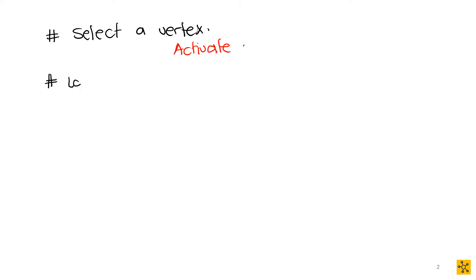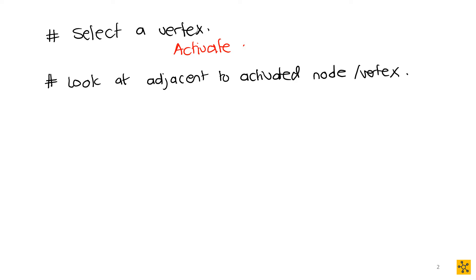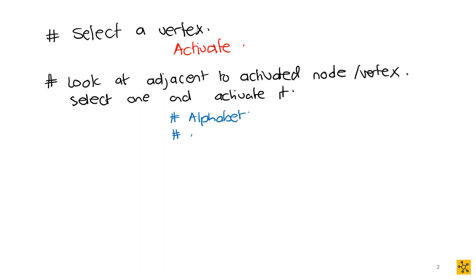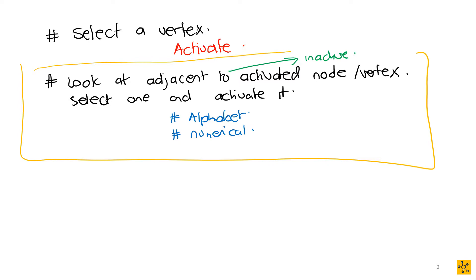Then you look at the vertices adjacent to this activated node and you select one and activate it. When you select one and activate it, usually you go by alphabet or by numerical order. Then you look at all the adjacent vertices connected to that activated node, and select one and activate it — only looking at inactive adjacent vertices.